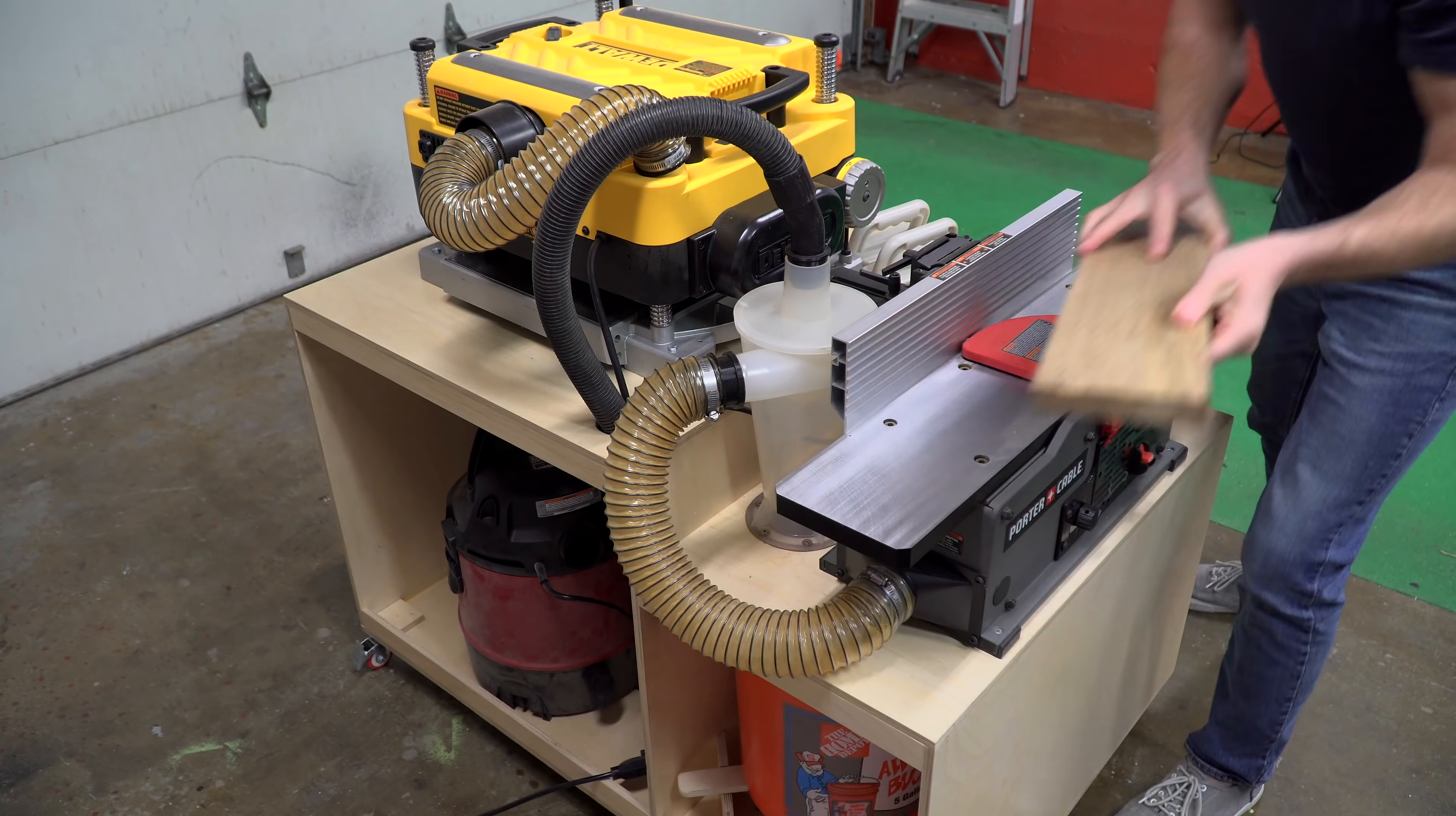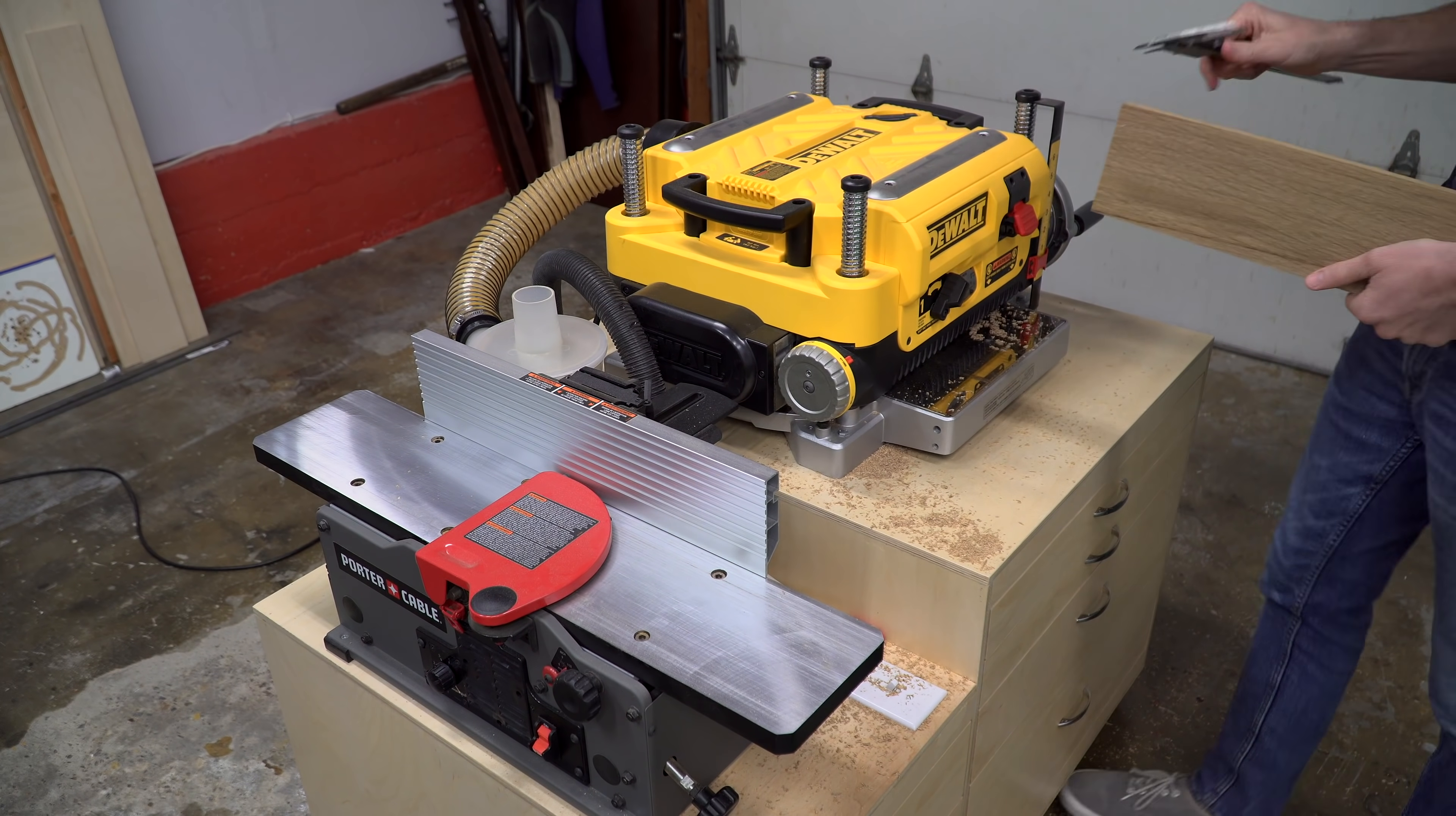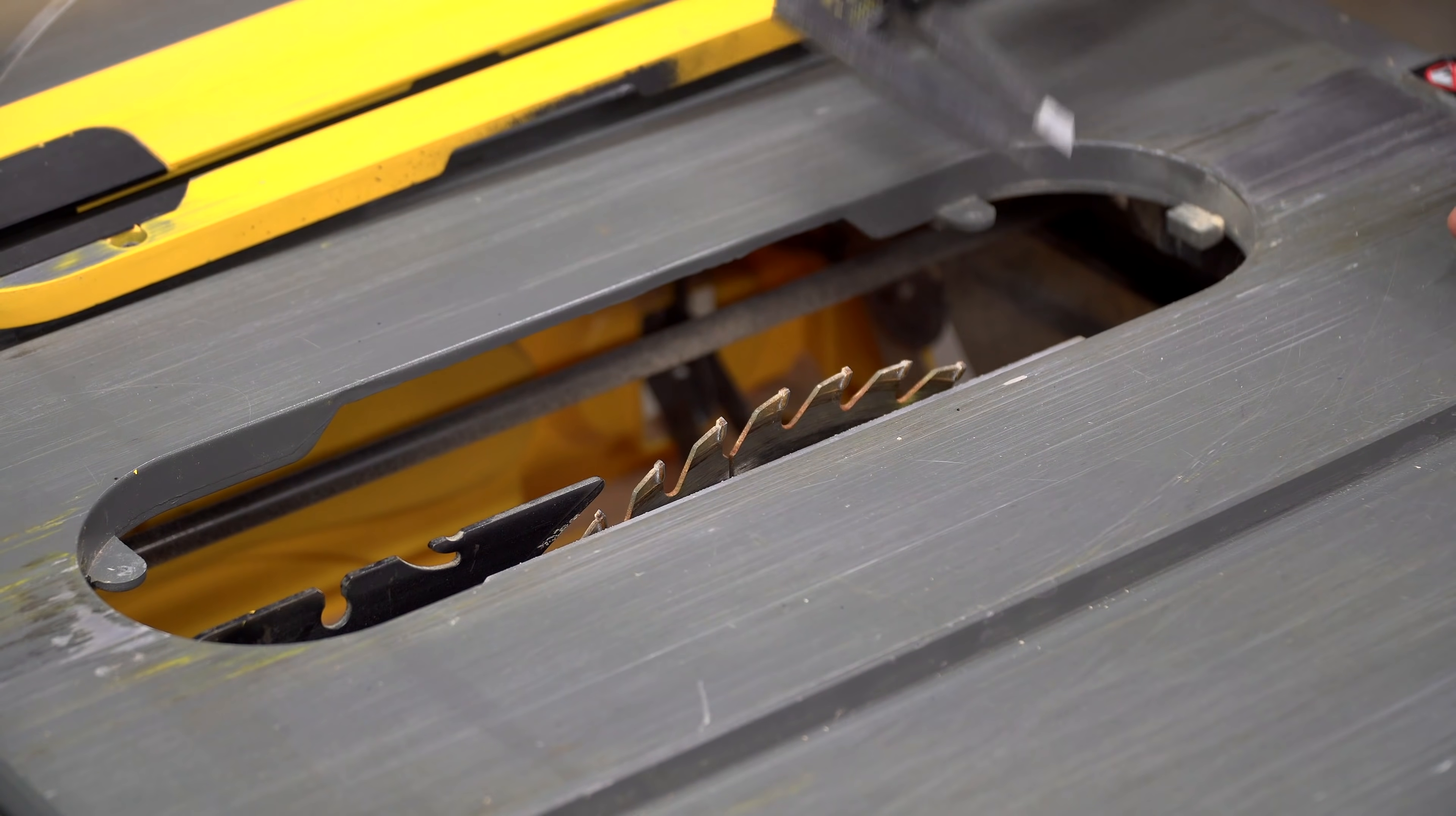For the new insert, I started with a piece of white oak. I jointed a face and an edge and then moved on to the planer. At the planer, I planed it until it was just a little bit thicker than it would ultimately need to be. I did this because the depth of the supports varies and I needed the extra material to be able to make fine adjustments.